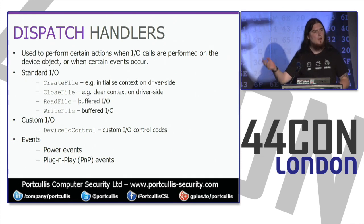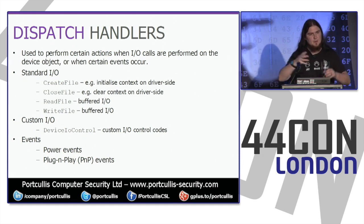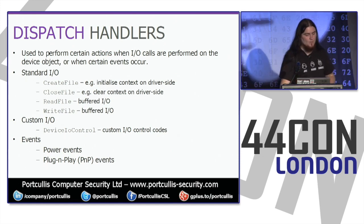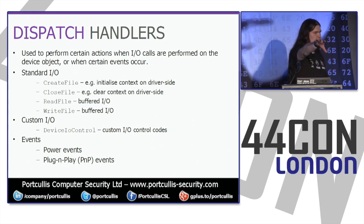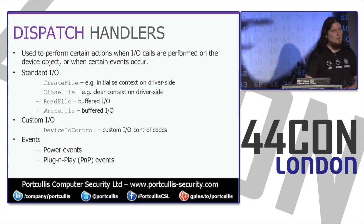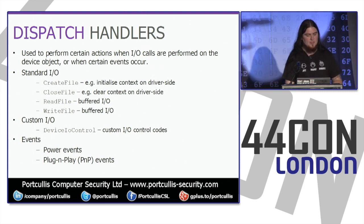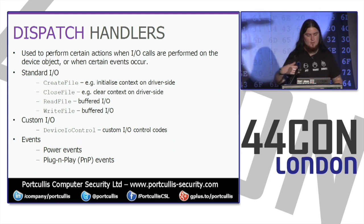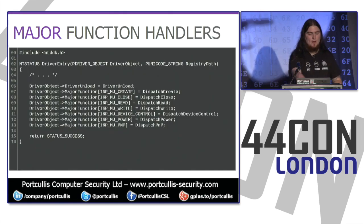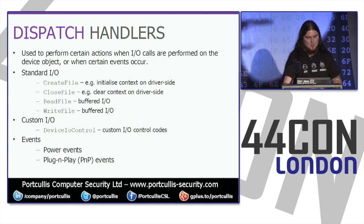This is where IRP_MJ indexes into an array of function pointers. Because that's quite restrictive as a model, they also have custom I/O via the user mode DeviceIoControl API. DeviceIoControl passes some sort of I/O control code, which gets dispatched from dispatch device control. I'll explain that a bit more later.